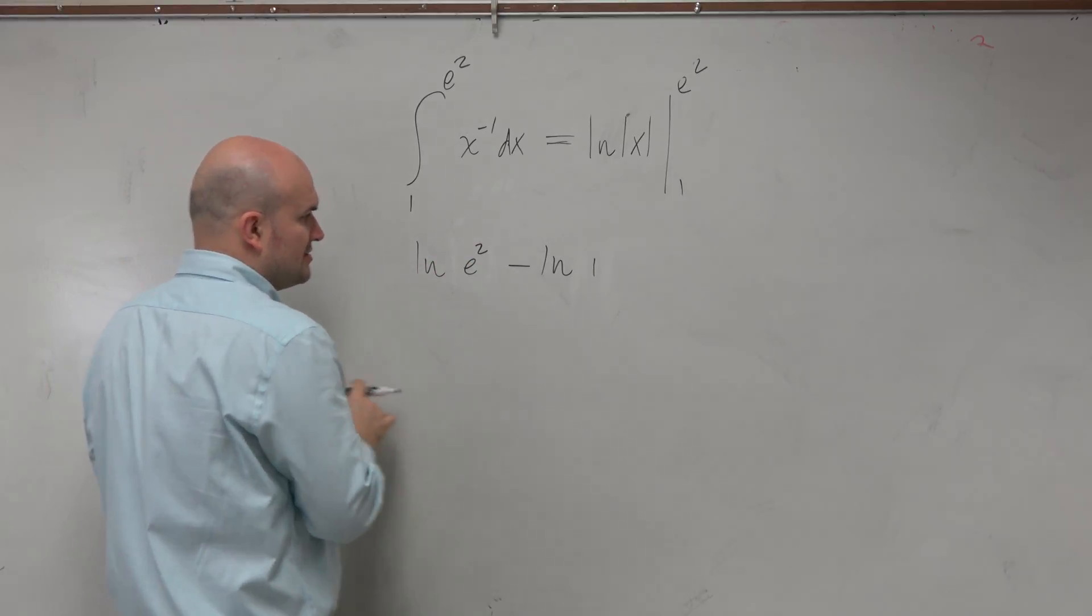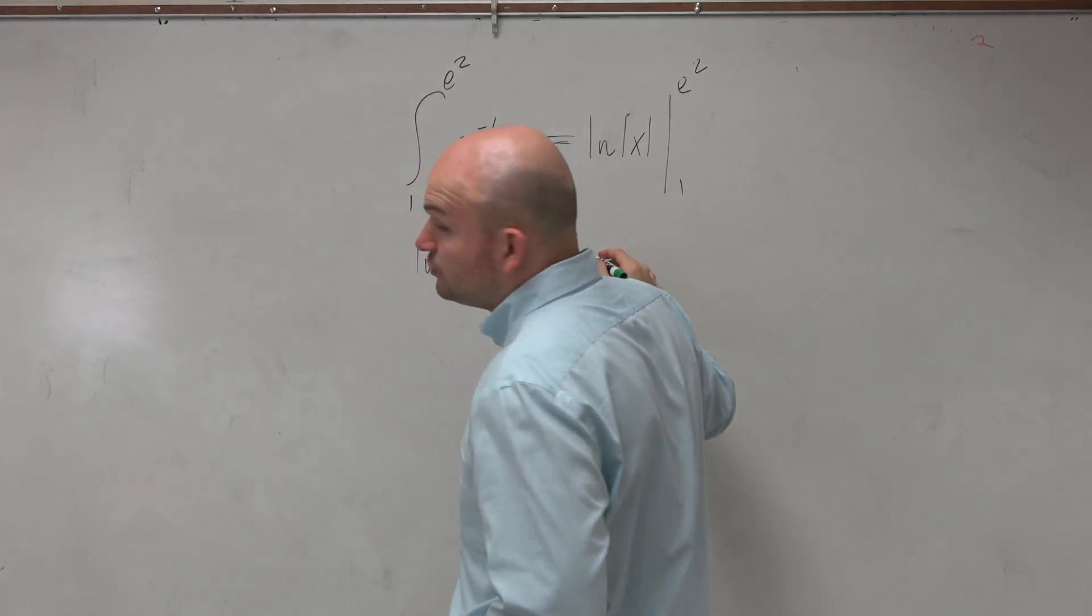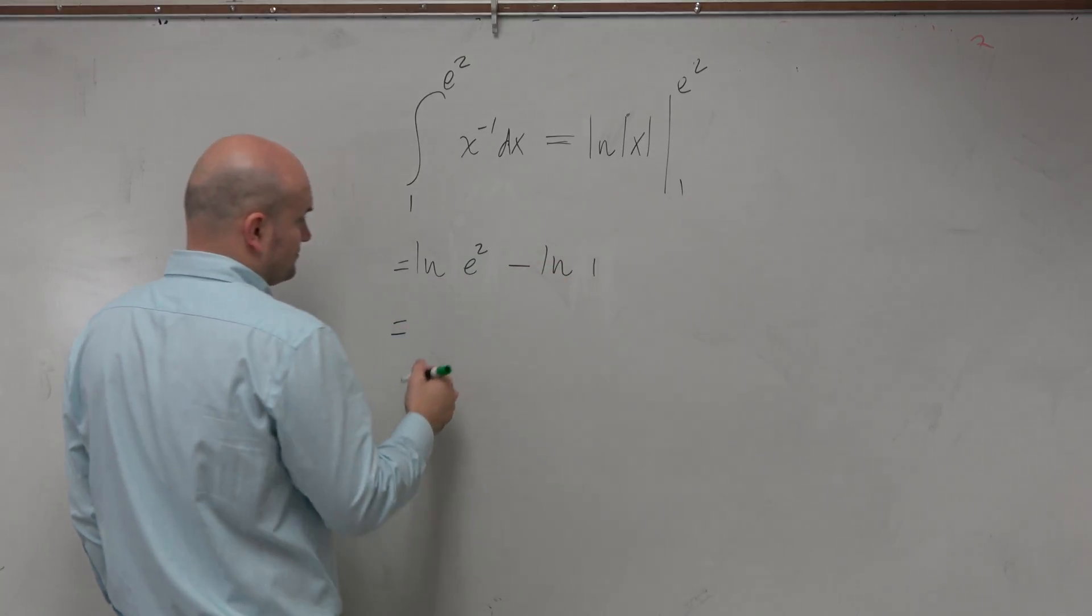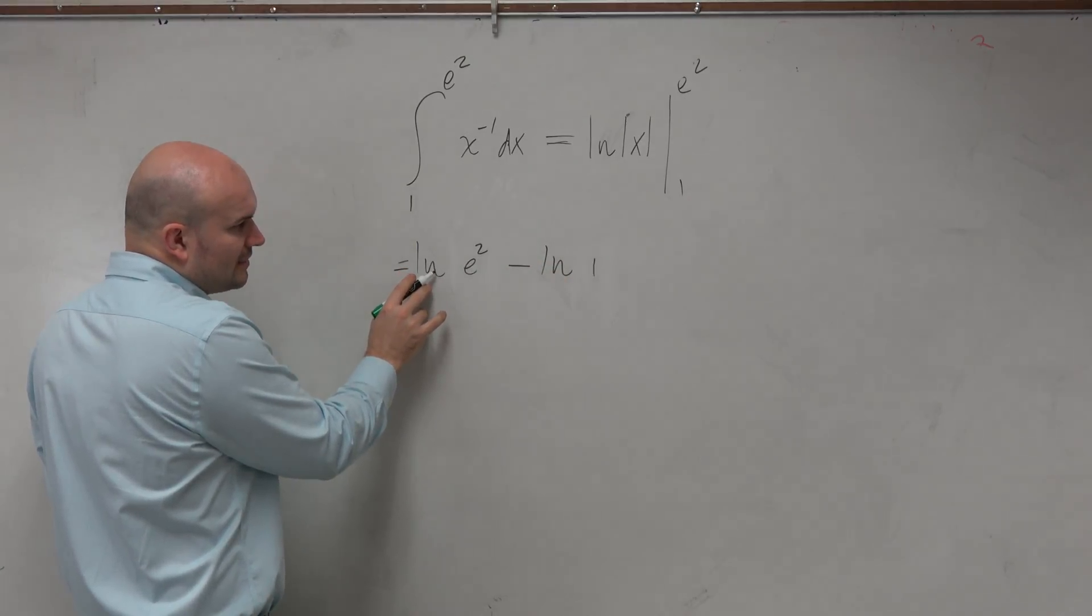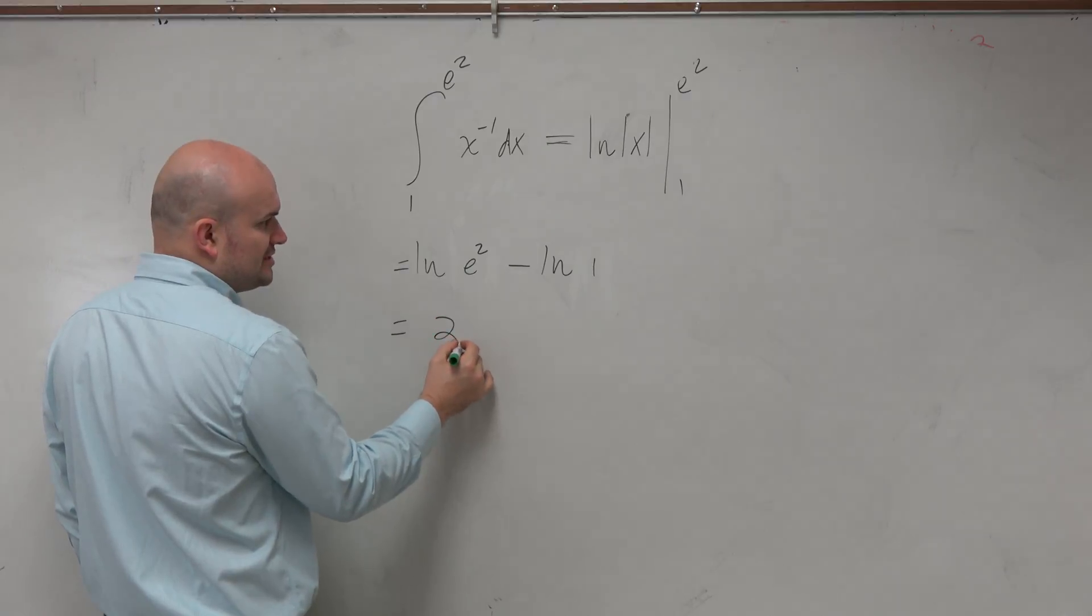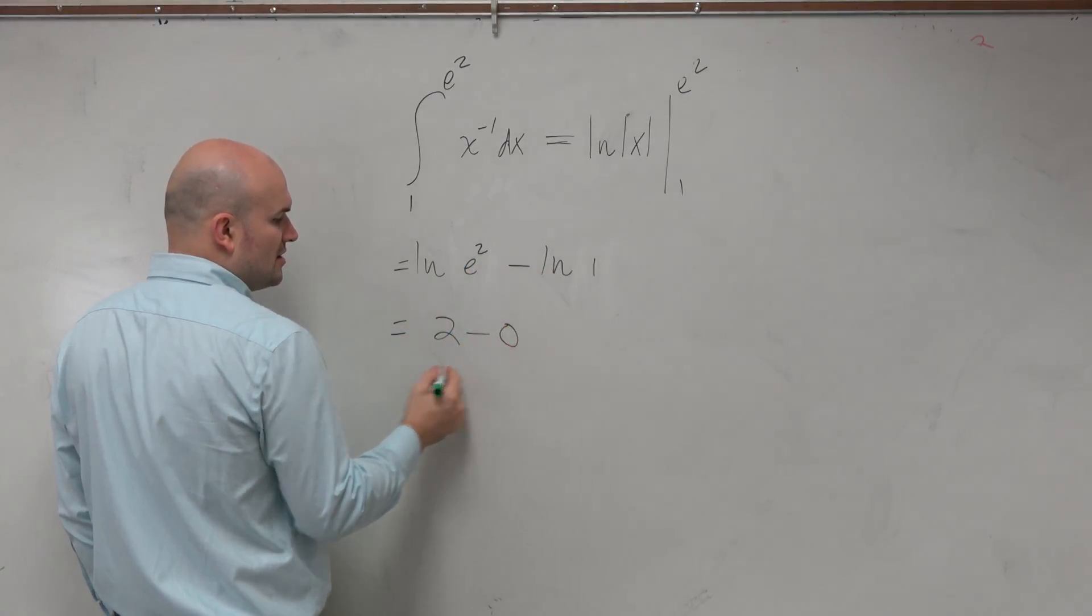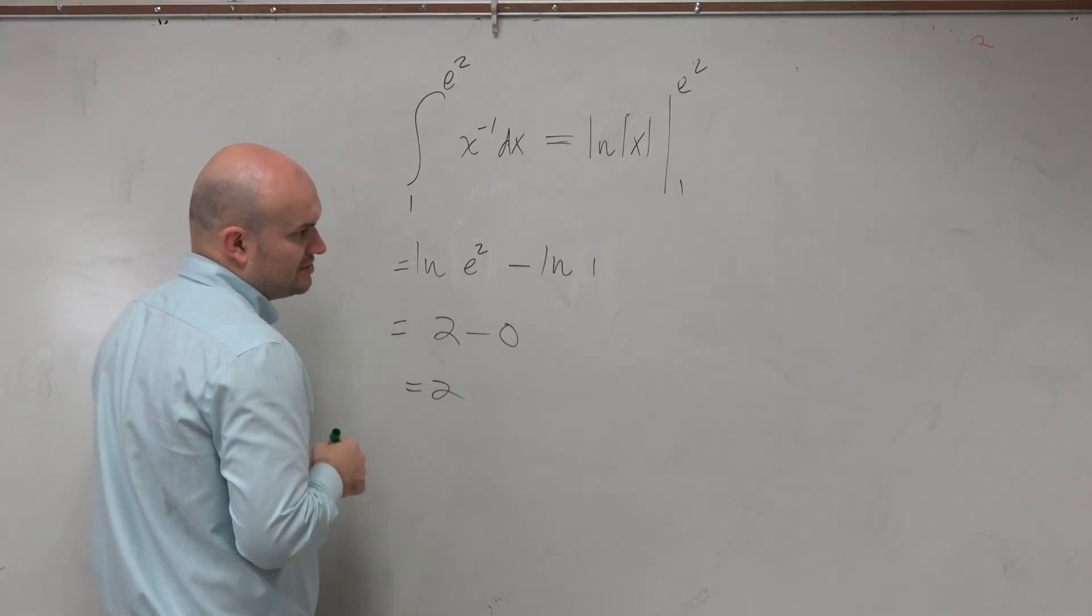So let's go ahead and simplify this. Well, using your rules of exponents that we have used, ln of e squared is just going to be 2. And then ln of 1 is going to be 0. So your answer is 2.